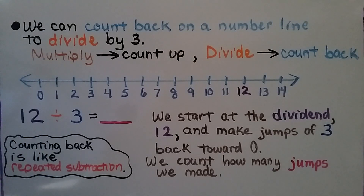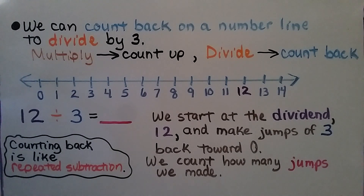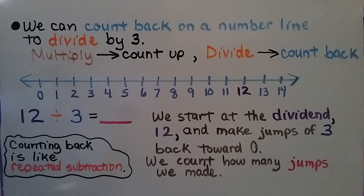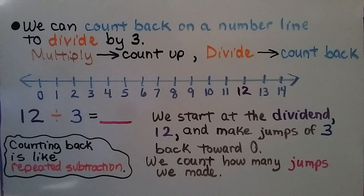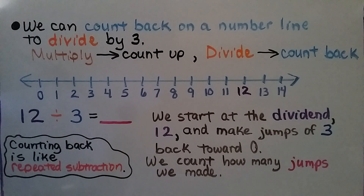We can count back on a number line to divide by 3. Remember, when we're multiplying on a number line, we count up. When we're dividing, we count back. We have 12 divided by 3. We start at the dividend 12, right here, and we make jumps of 3 back towards 0, and we count how many jumps we made.